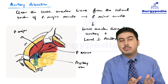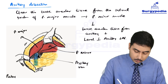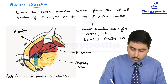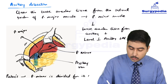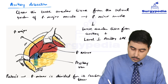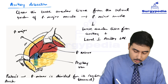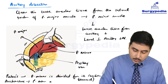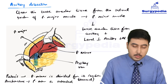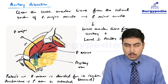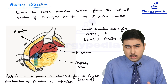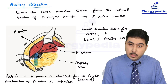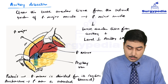Regarding the pectoralis minor — there are modifications of MRM. In Patey's mastectomy, the pectoralis minor is divided from its insertion at the coracoid process. In Auchincloss's modification, the pectoralis minor is retracted and not divided. Just be careful whether the examiner has asked for Patey's specifically or left it unspecified — if unspecified, you may write Patey's or mention both modifications.